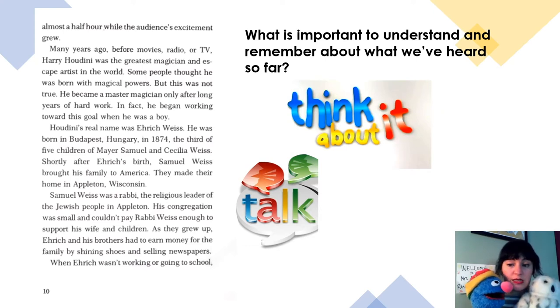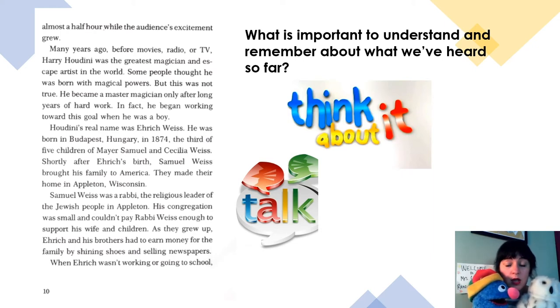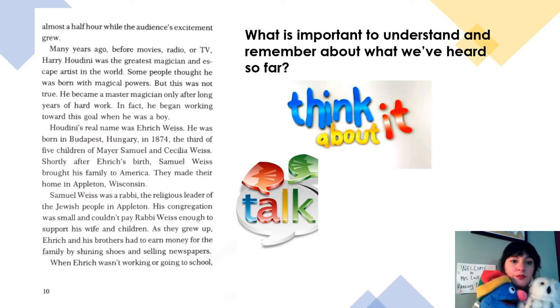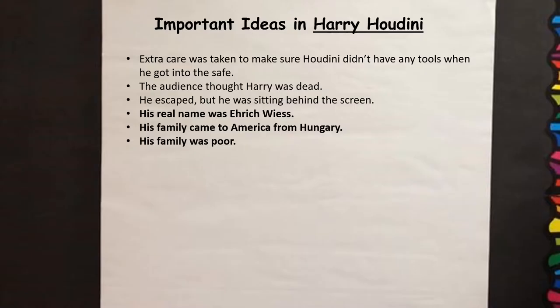What do you think is important in that part of the reading — what we've read so far, including that last section? Some of the important ideas were: Harry Houdini's real name was Enric Weiss; he moved from Hungary to America; and his family was poor.